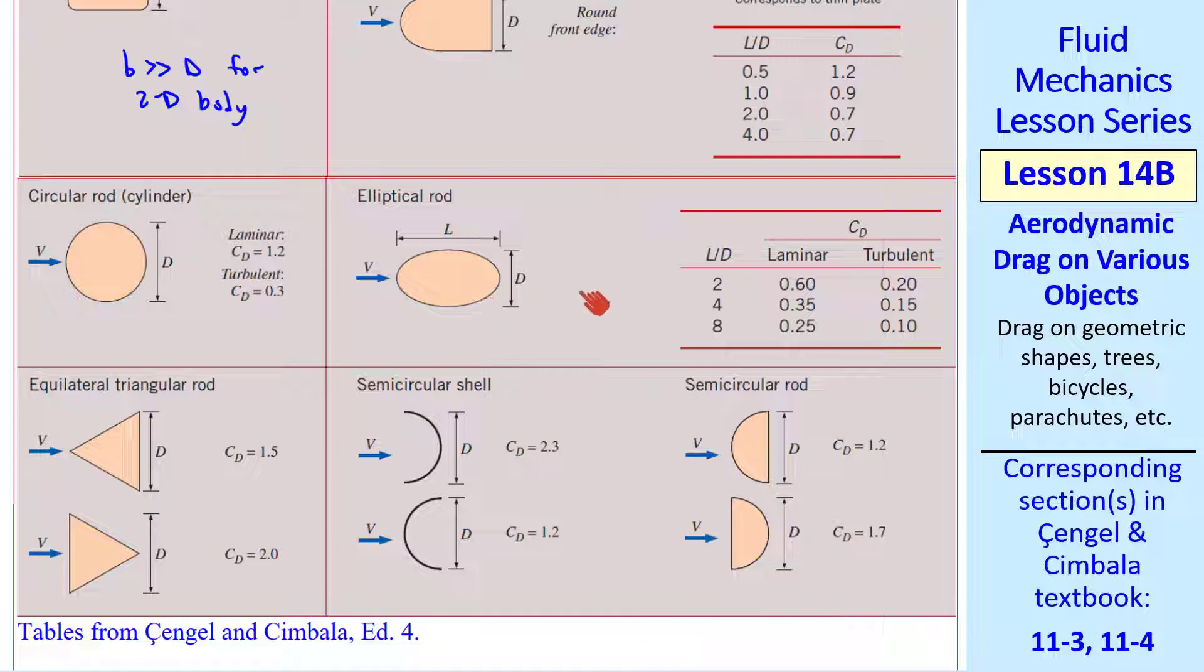For elliptical rods, again, CD depends on L over D. CD keeps decreasing for either the laminar or the turbulent case as L over D increases.